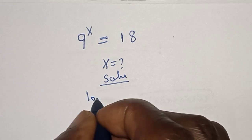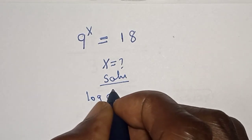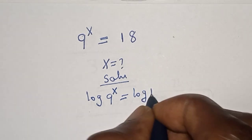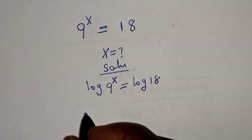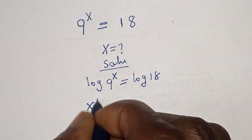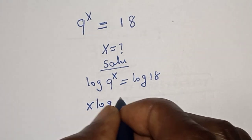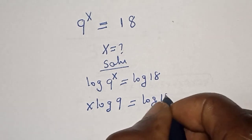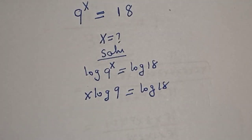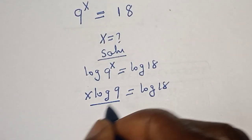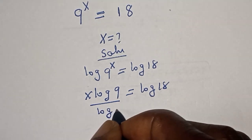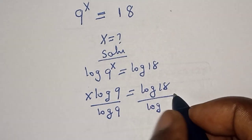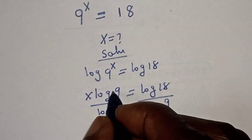Log of 9 to the power of s is equal to log 18, and we have s times log 9 is equal to log 18. That's the variable side. Divide both sides by log 9.